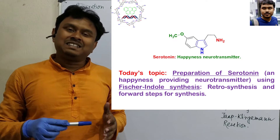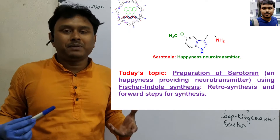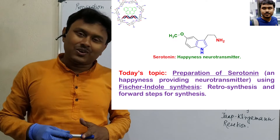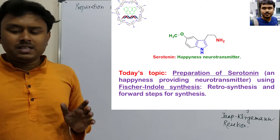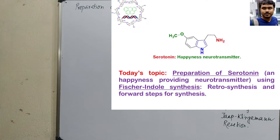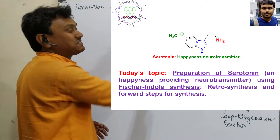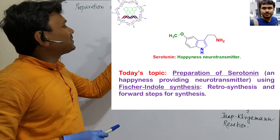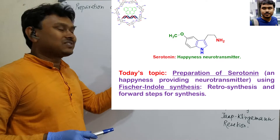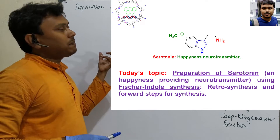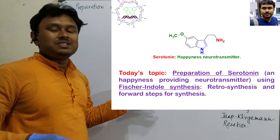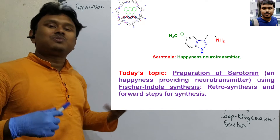Serotonin is a neurotransmitter and it makes you feel happy. It is naturally occurring and it is a vasoconstrictor also. Today's talk will cover the basic idea — I will expand the retrosynthesis of this molecule, forward step synthesis, and one important reaction involved in this process: the Japp-Klingemann reaction. We will discuss how this is used in Fischer-Indole synthesis to make the process more versatile and easy.